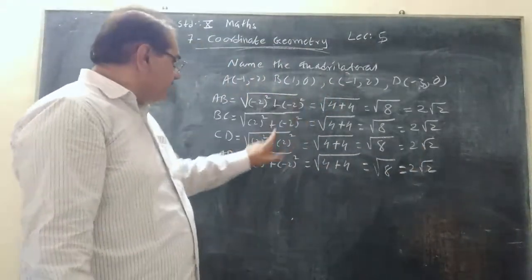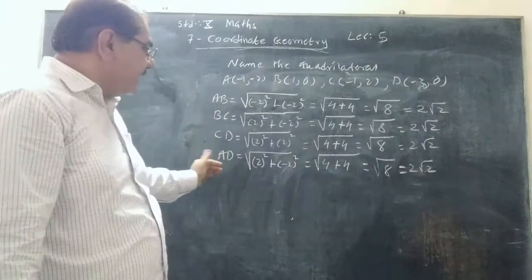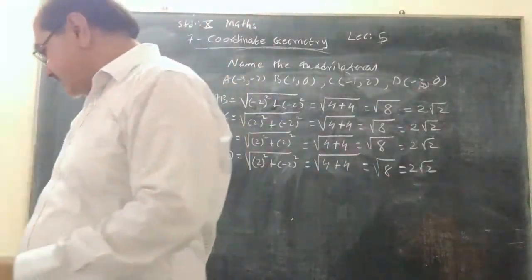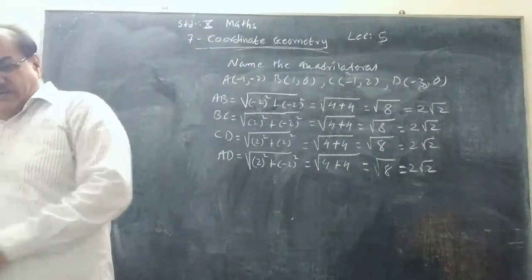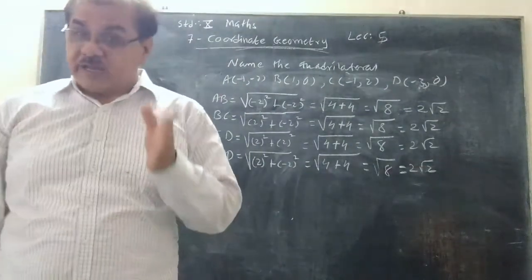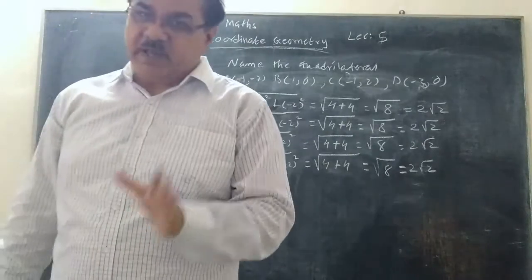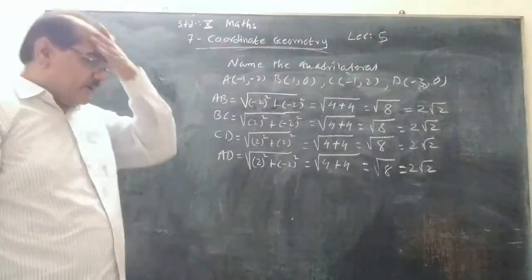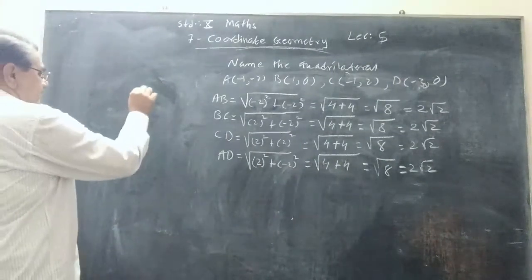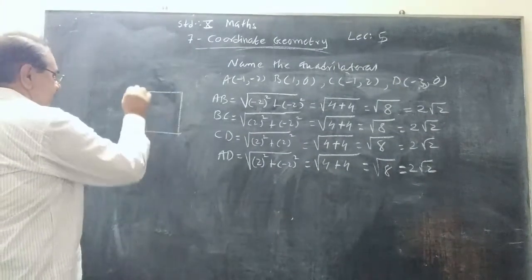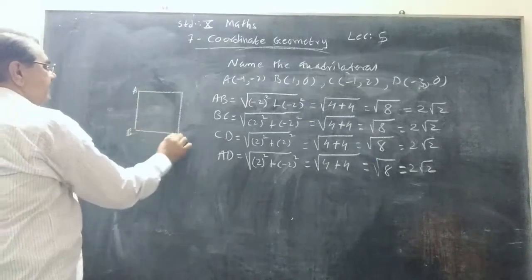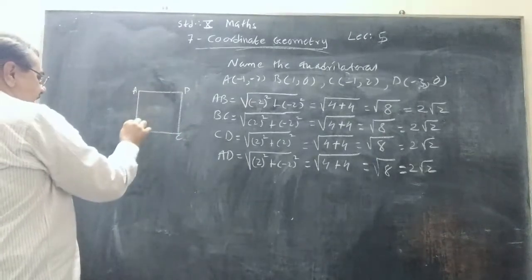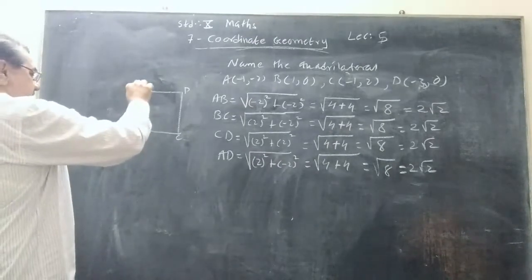So all 4 sides AB, BC, CD, AD are the same length. So if a quadrilateral has all 4 sides equal, then it can be a square or it can be a rhombus. For proving it's a square, we need to prove that every angle is a right angle.